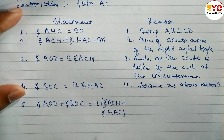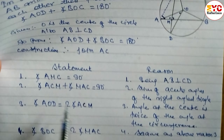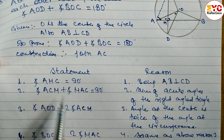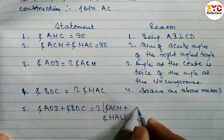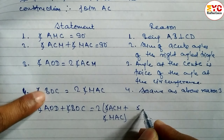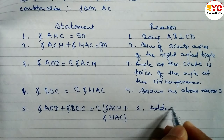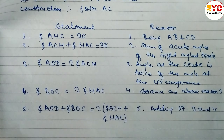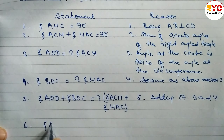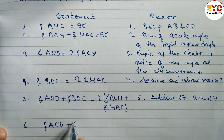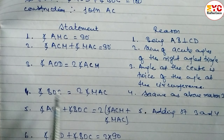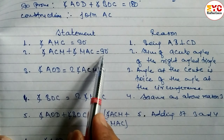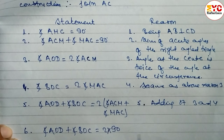So: angle AOD + angle BOC = 2(∠ACM + ∠MAC). From statement 2, we know ∠ACM + ∠MAC = 90°, so we substitute 90° here. Reason for statement 5: adding statements 3 and 4. Statement 6: angle AOD + angle BOC = 2 × 90°.